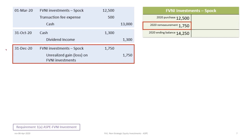Then on December 31, 2020, we need to remeasure the shares to fair value. We debit FVNI Investments — Spock and credit Unrealized Gains or Losses on FVNI Investments for $1,750. That is calculated as 5,000 shares times the difference between $2.85 and the $2.50 cost. This gives us an ending T-account balance of $14,250, equivalent to 5,000 shares times $2.85.